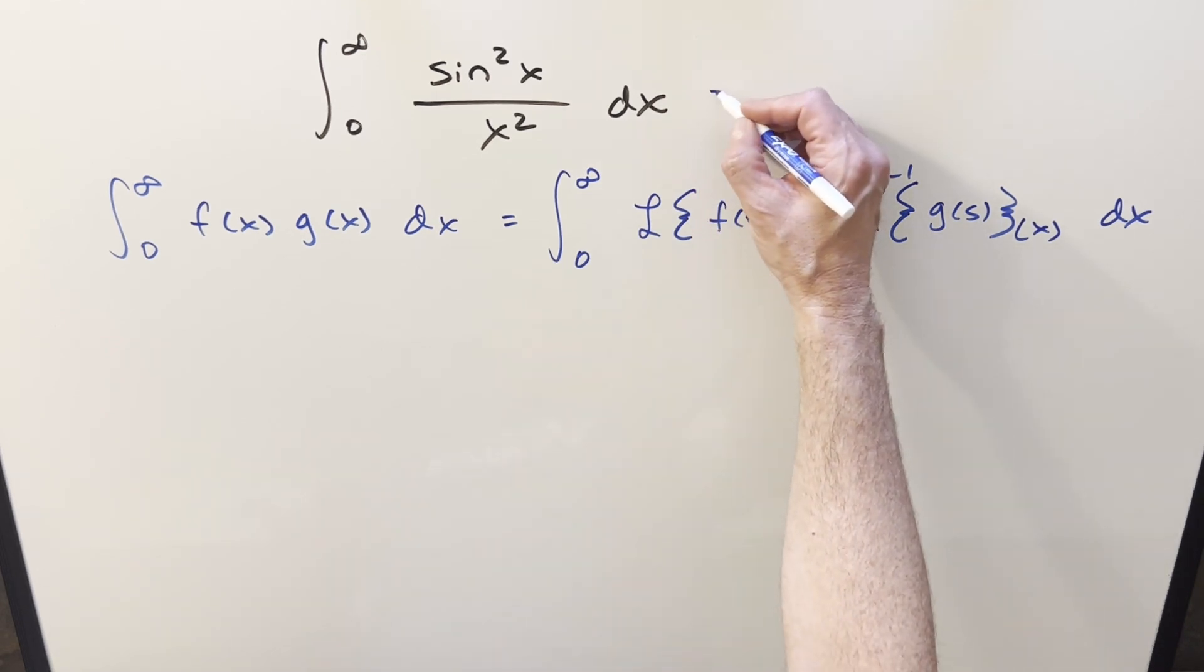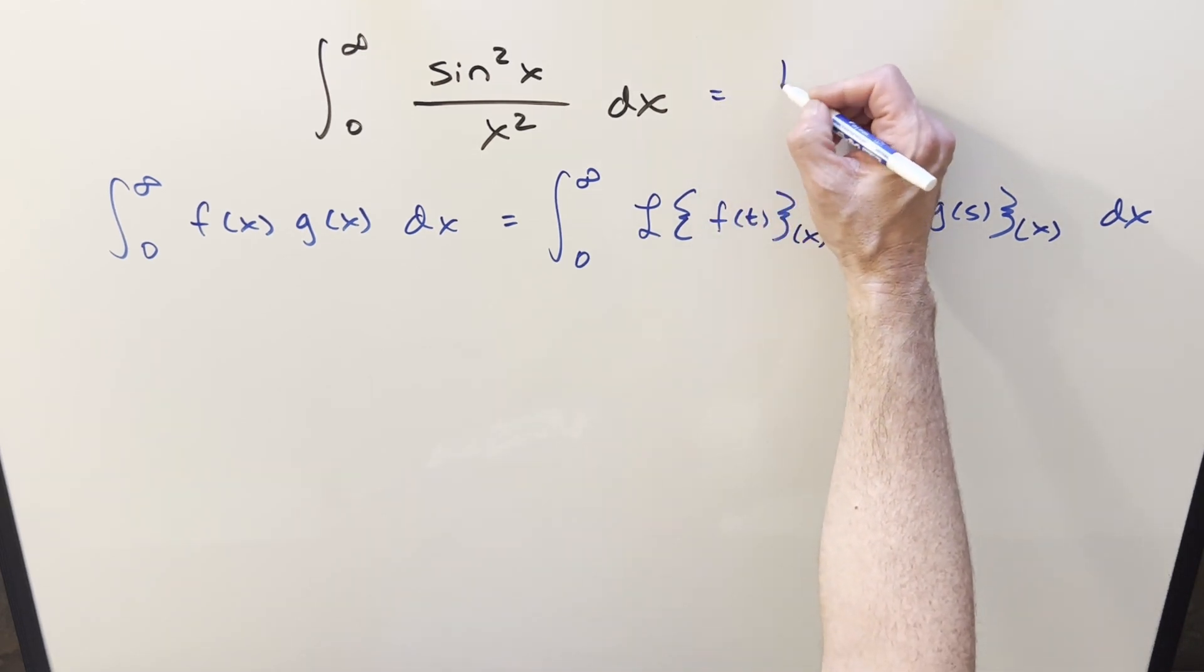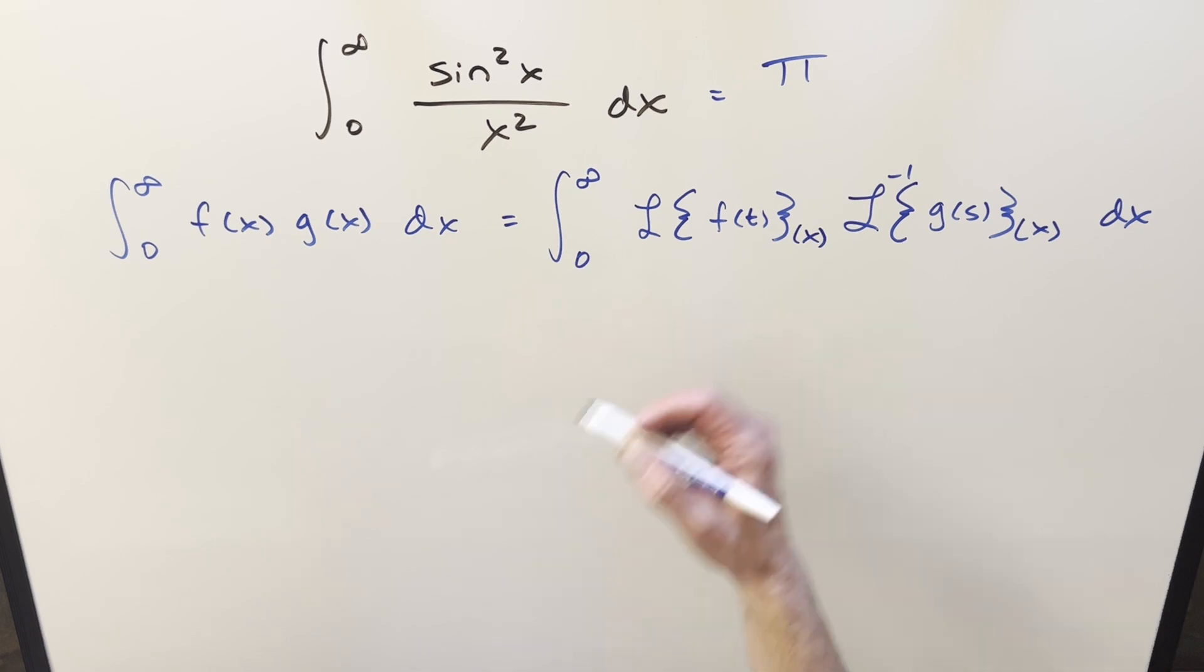Now this one, you may already know the answer. It's kind of a very common form. And if you did it with Lobachevsky's integral, it's also really fast. This is going to be just pi squared over 2. Or sorry, just pi over 2.